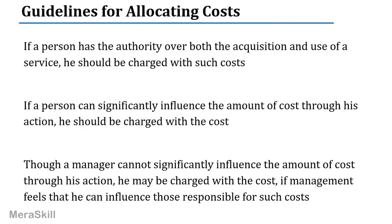Guidelines for allocating costs: First, if the person has authority over the cost — over both the acquisition and the use of the service — he is charged with such costs. Second, if a person can significantly influence the amount of cost through his actions, he should be charged with the cost. Third, even if a manager cannot significantly influence the amount of cost, he could be charged with the cost if management feels he can influence those who are responsible for such costs. These are guidelines for allocating costs, and some of these items relate largely to common costs, which we will also cover as another subtopic.